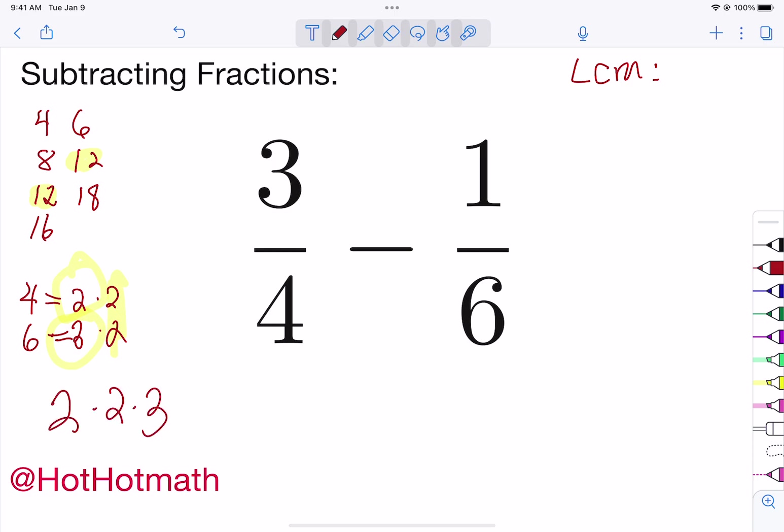The one has an extra two, the one has an extra three. Two times two times three is also twelve. Now the least common multiple is twelve.